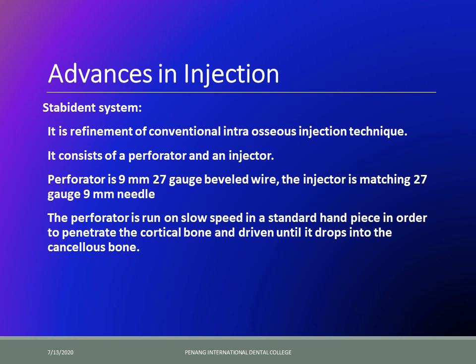Coming to advances in the field of injections — the Stabident system is a refinement of the conventional intraosseous injection technique. Basically, you drill a very small hole into the bone. This is preferentially done in the mandible because it has denser bone where local anesthesia may be ineffective. In the maxilla, the bone is very porous so local anesthesia tends to flow freely and achieves desired anesthesia almost all the time, but the mandible is a different story.